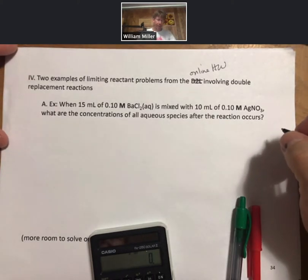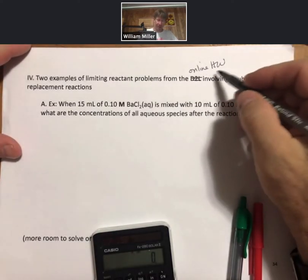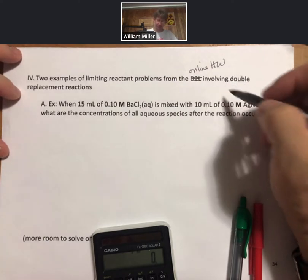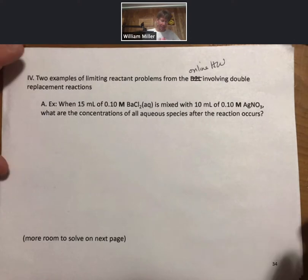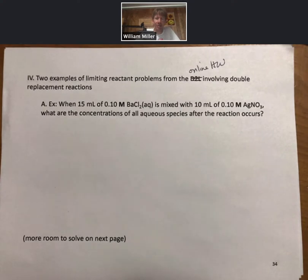Let's do one of the limiting reactant problems from the online homework involving double replacement reactions. When 15 milliliters of 0.10 molar barium chloride aqueous is mixed with 10 milliliters of 0.10 molar silver nitrate, what are the concentrations of all aqueous species after the reaction occurs?